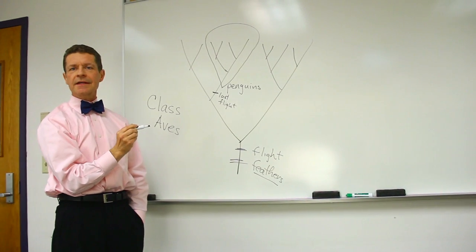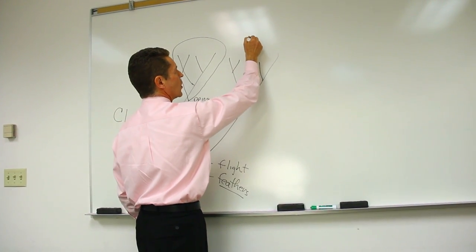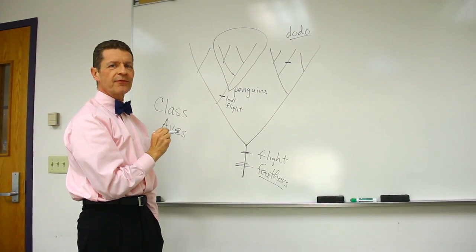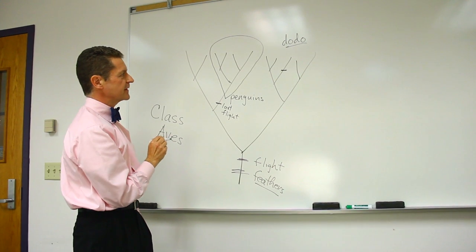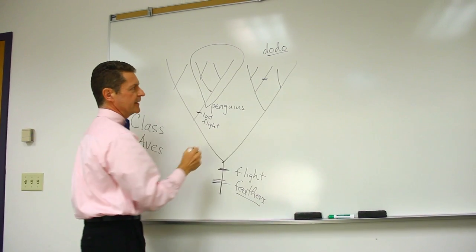But you know what? Other things did too. Like the elusive dodo. A dodo is a huge flightless pigeon. It's actually a kind of pigeon. So if this represents the pigeons, here's this one that lost flight.